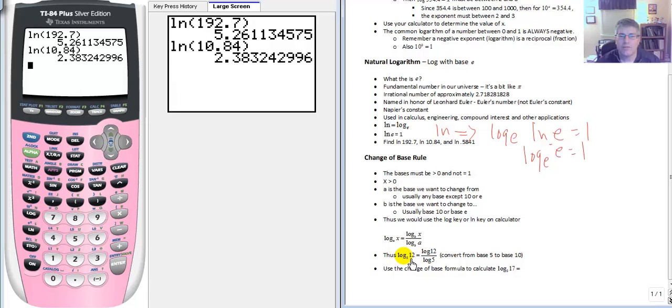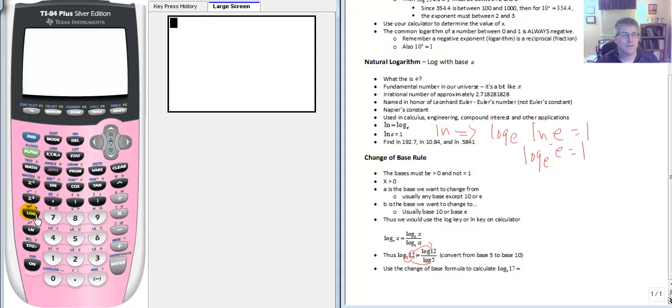So if we want to change log base 5 of 12 to the common log, we just simply type into our calculator log 12 divided by log 5. This will convert from base 5 to base 10. And kind of how I remember what goes where. The 12 here seems to be above the 5, so that goes on top. And the 5 is just a little bit below the 12, so the log base 5 goes below. So using my calculator, I can simply type in log, common log 12, all divided by the common log of 5. And our answer is 1.5439.